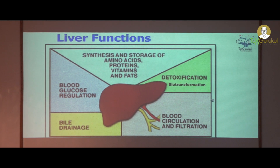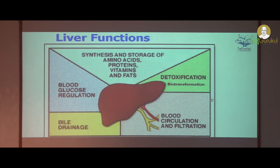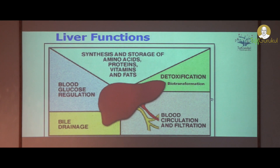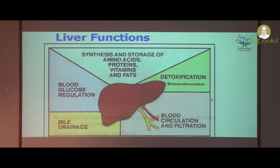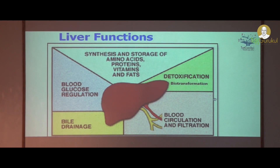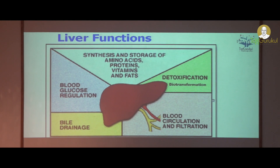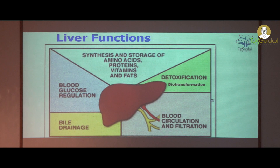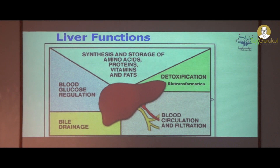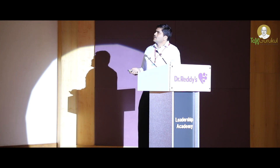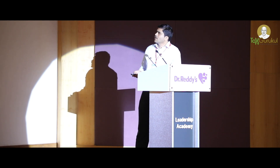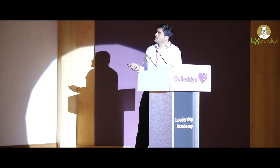Coming to the liver function, as you all know, it is a very important organ for toxicity studies. It is the organ where detoxification occurs and the biotransformation of drugs takes place. There is also bile drainage, and if any recirculation of bile occurs, then the drug will keep recirculating. Additionally, there is blood glucose circulation and the synthesis and storage of amino acids, proteins, vitamins, and fats.